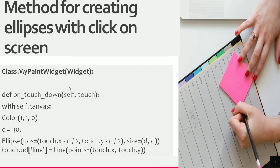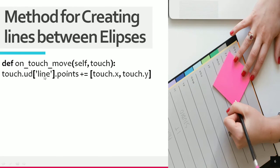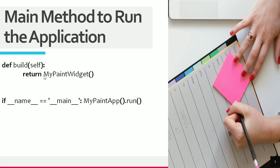The next step is creating a main method for the application. We define a build method providing the self keyword and return MyPaintWidget. Inside the main block, we run the application by calling MyPaintApp().run(), which will run the application. This is the complete code for creating a simple paint app.